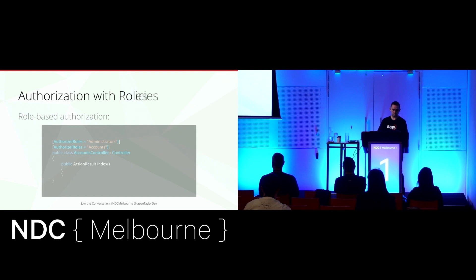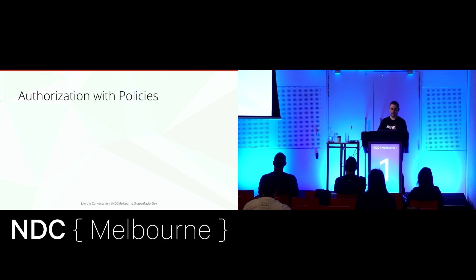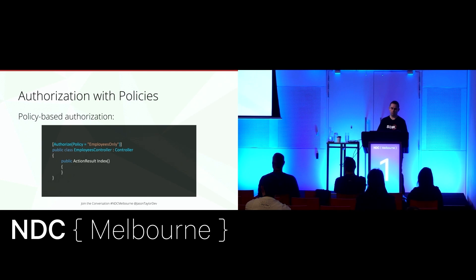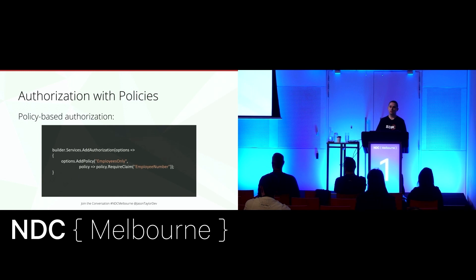Next up we have authorization with policies, which is really the engine of the ASP.NET Core authorization system. With policy-based authorization, we can use the authorize attribute to specify a policy. Access to the employee controller will be restricted to users who meet the requirements of the employees-only policy. These policies are defined when you're defining your services — we've added a policy called employees only with a single requirement that the authenticated user has a claim of employee number, but we don't need to worry about what value it is, just that they have that claim.